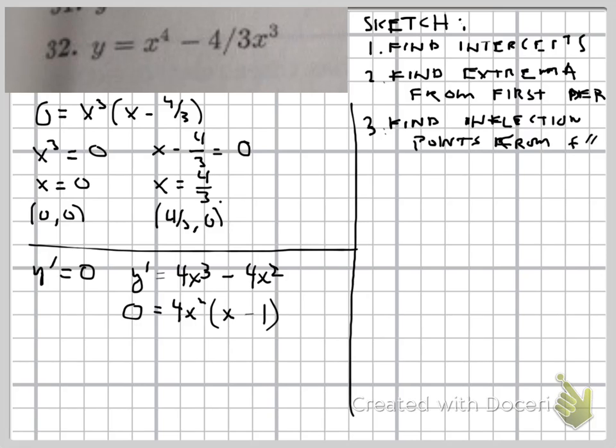Again, the zero product property, we get 4x squared equals zero, or x minus 1 equals zero. So we get x equals zero and x equals 1.